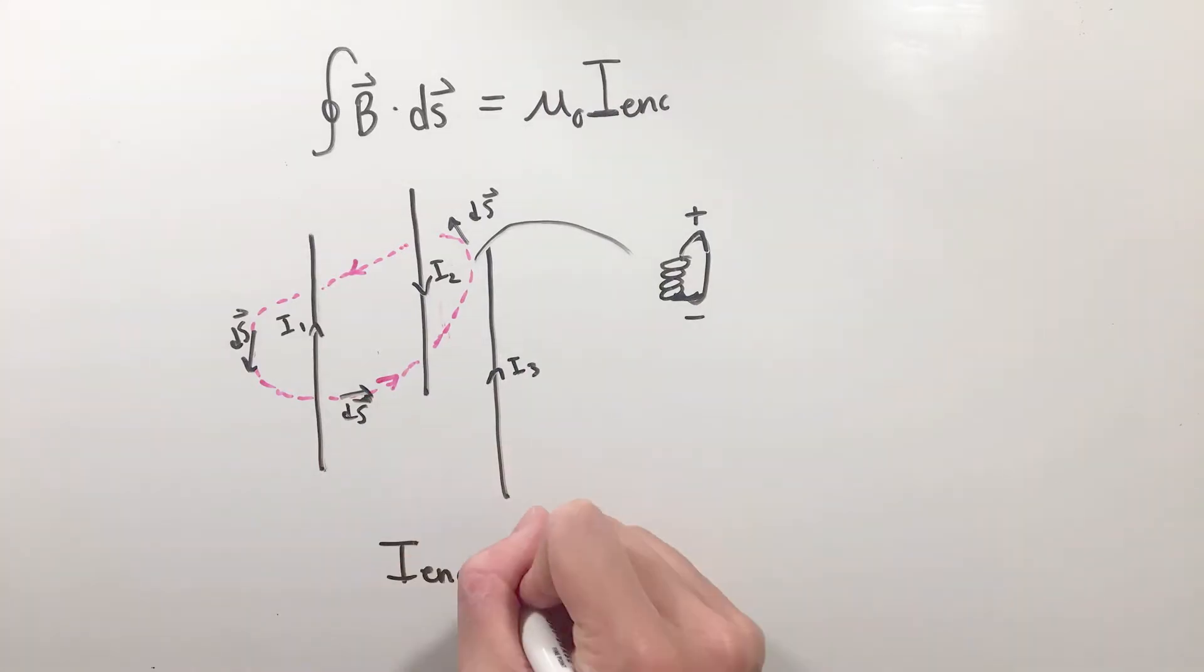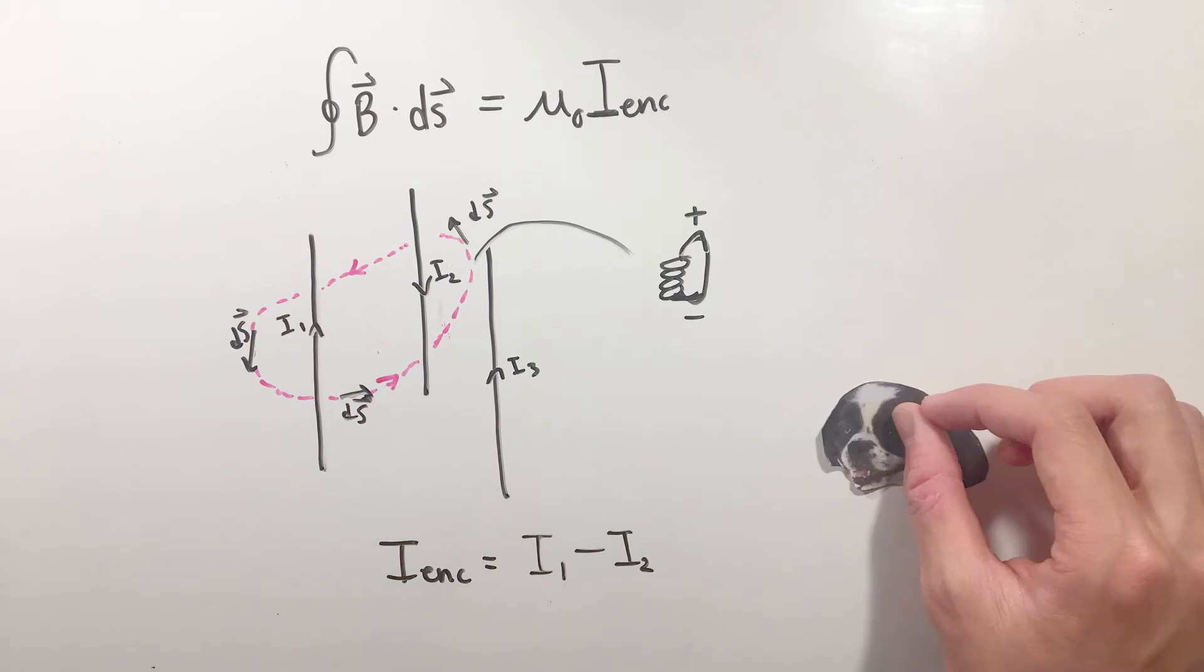Curling your right hand around the direction of your Amperian loop, all currents pointing in the same direction as your thumb are positive currents, while those pointing opposite to your thumb are negative.